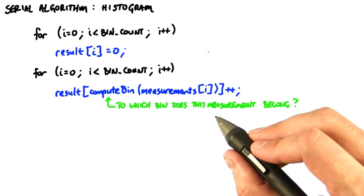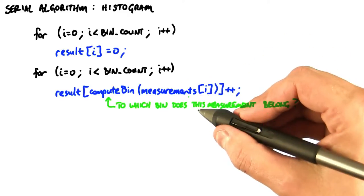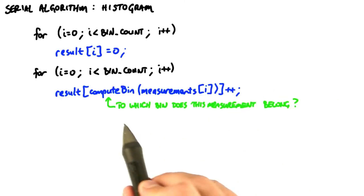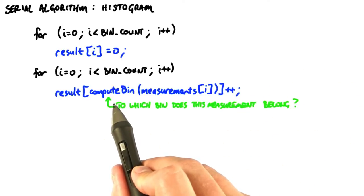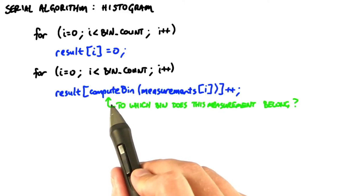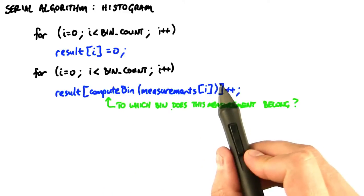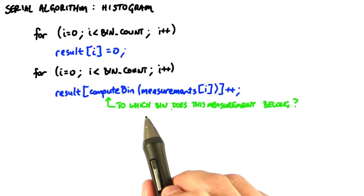Much more interesting is the second phase. We're going to loop through all the data measurements. For each data measurement, we first determine to which bin it belongs. That's the compute bin call, and I'll show an example in a second. Then we fetch the current value of that bin, increment it, and store the new value back into the bin.